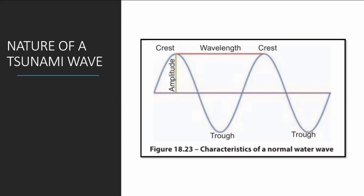The maximum distance a water particle travels in the downward direction is known as a trough. The distance between two successive crests or troughs is called the wavelength — that is, from one crest to the closest next crest or one trough to the closest next trough. The depth from the midpoint of a wave to its crest or trough is known as the amplitude, which is the maximum distance traveled by a particle in the upward or downward direction.